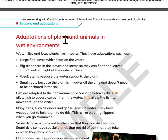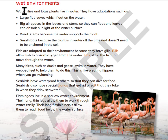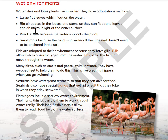Adaptations of plants and animals in wet environments. Water lilies and lotus plants live in water. They have adaptations such as large flat leaves which float on the water, big air spaces in the leaves and stems so they can float and leaves can absorb sunlight at the water surface, weak stems because the water supports the plants, and small roots because the plant is in water all the time and doesn't need to be anchored in the soil.